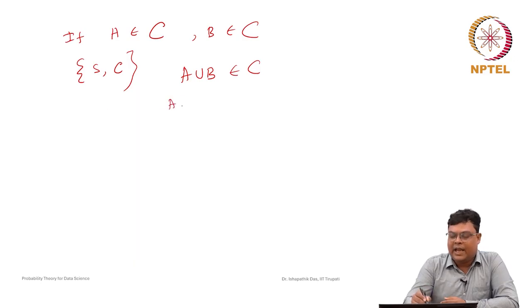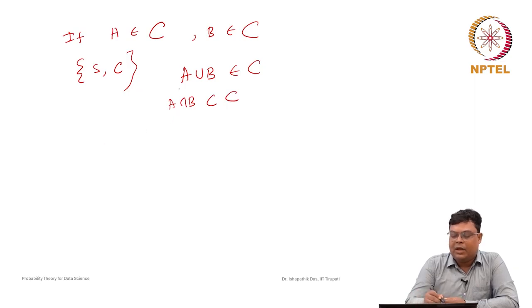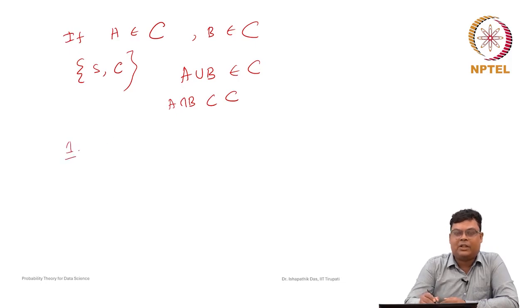Then A intersection B will also be in C, so it is also an event. Now, some special events: one event is called the impossible event or null event. Suppose phi — phi is a null set.